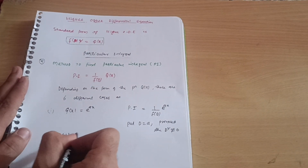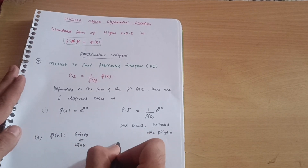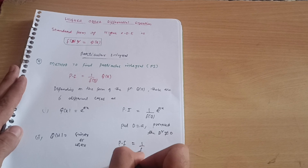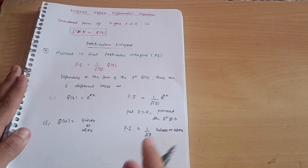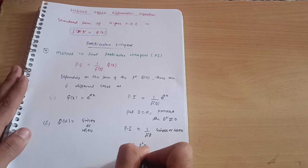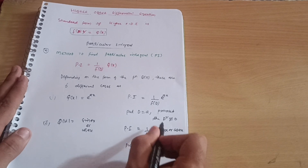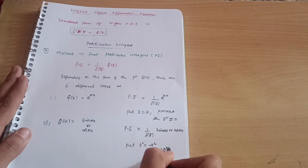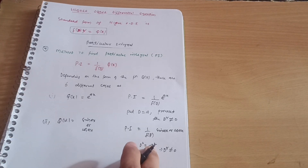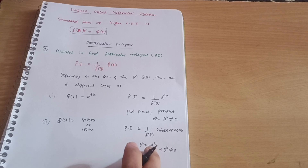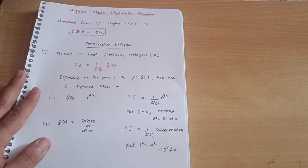The second case is when Q(x) = sin(ax) or cos(ax). In this case, the particular integral is 1/f(D) · sin(ax) or cos(ax), and you replace D² with −a² in f(D). The condition is the same: the denominator should not equal zero. If the denominator becomes zero, you must multiply the numerator by x and differentiate the denominator.